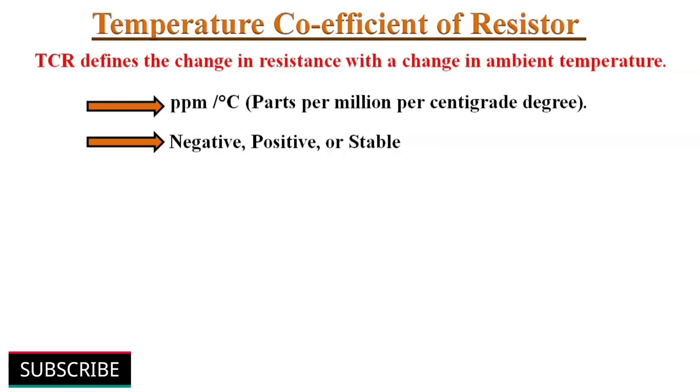Next parameter, temperature coefficient of resistor or TCR. It is one of the main used parameters to characterize a resistor. It defines the change in resistance of a resistor with change in ambient temperature. TCR is measured in ppm per degree centigrade. Resistors are available with a TCR that is negative, positive, or stable over a certain temperature range. Suppose if a resistor's resistance value is 100 ohms at room temperature or 25 degree centigrade and its TCR is 50 ppm per degree centigrade.